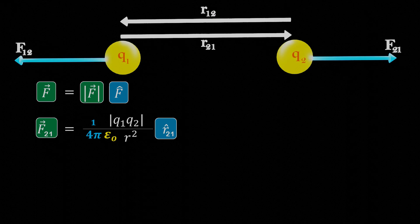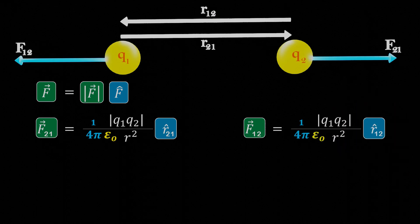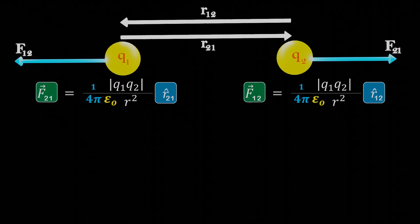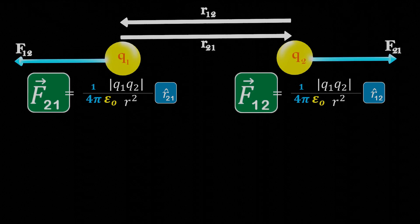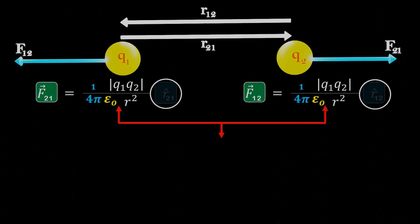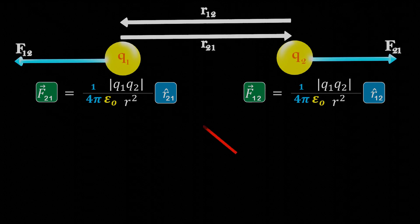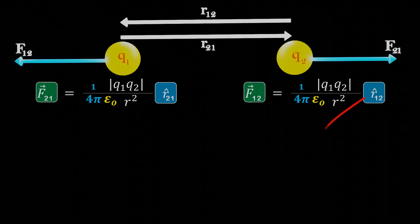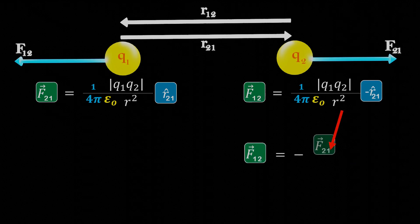Similarly, if we consider the force acting on the first charge due to the second charge, we can write its unit vector as R12-cap, which indicates the direction of the force. Now we have the vector forms of both forces, F21 and F12. If we ignore the unit vectors R21-cap and R12-cap for a moment, the remaining equations are the same. However, we know that R21-cap and R12-cap are opposite to each other. Therefore, if we replace R12-cap with minus R21-cap, we can see that F12 is equal to minus F21.